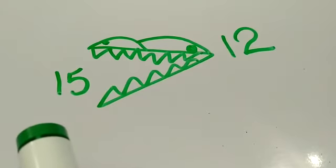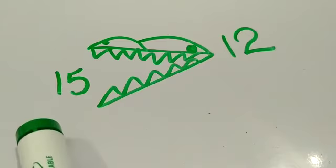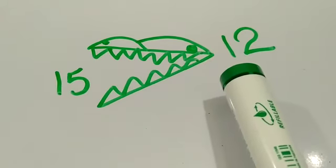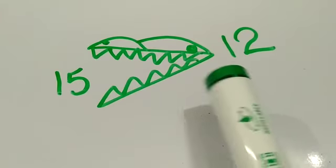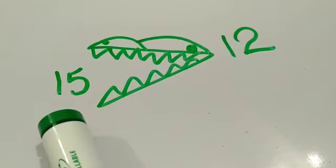Here you can see the two numbers 15 and 12. So the alligator is facing the bigger number 15.